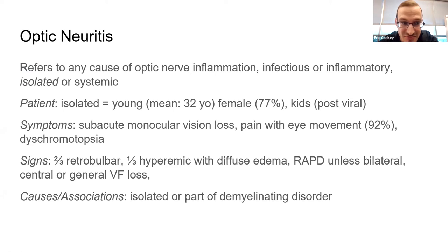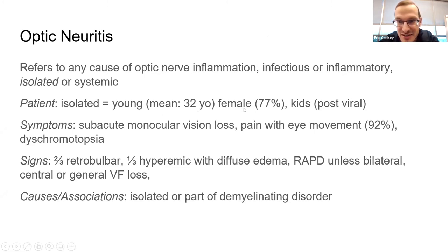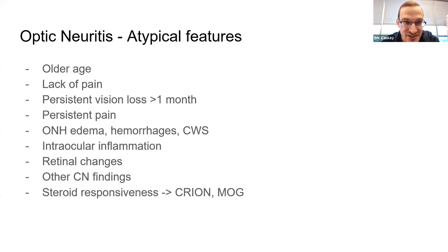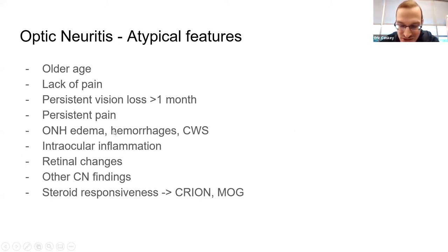Optic neuritis is a good one. There are many different flavors of optic neuritis, but the typical form is MS-associated, and most data comes from the Optic Neuritis Treatment Trial — those patients were evaluated for multiple sclerosis, pre-MOG and AQP4 era. Pain is a tip-off with a normal fundus exam. There are many atypical features that should make you think of other diagnoses. Fundus findings should push you away from MS toward something else.